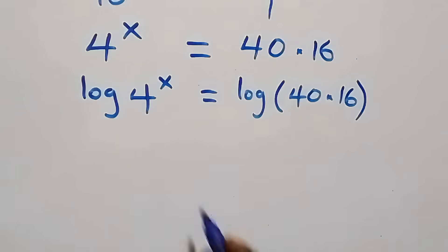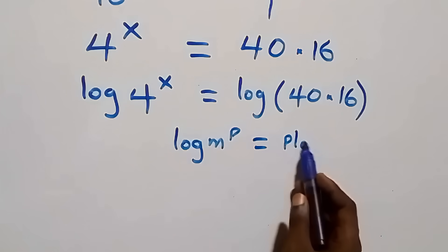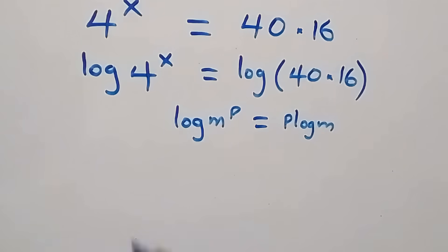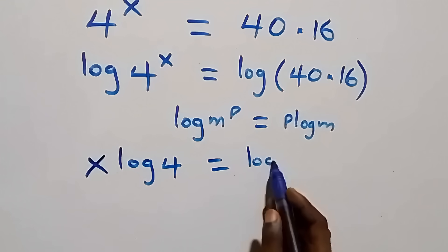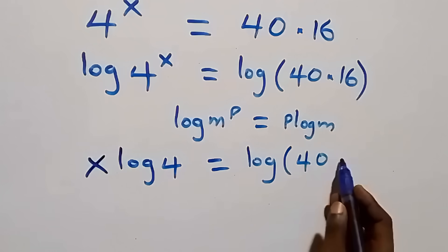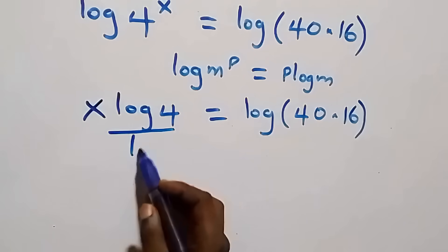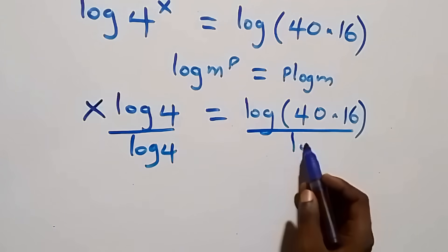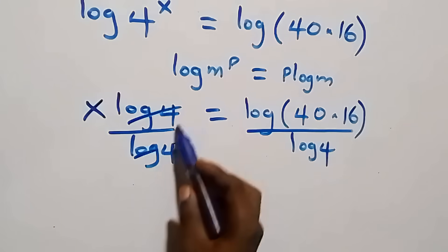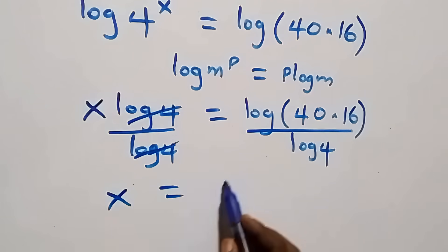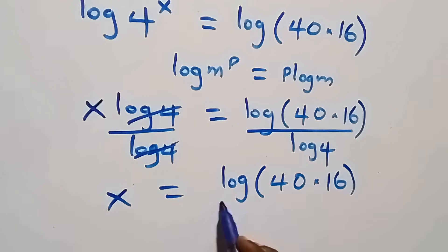We apply the power law of logarithm: log m raised to power p is the same as p times log m. So this becomes x times log 4 equals log of 40 times 16. We then divide both sides by log 4, giving us x equals log(40 times 16) over log 4.